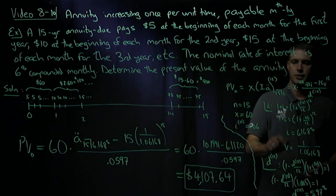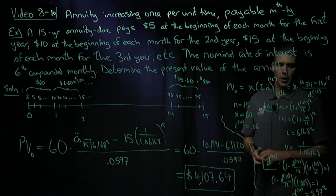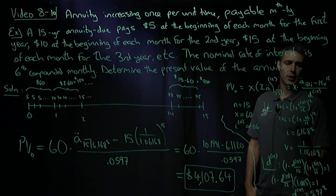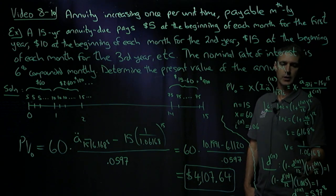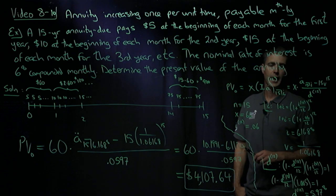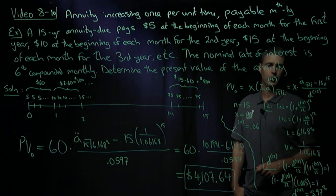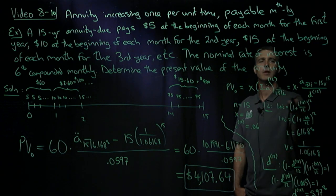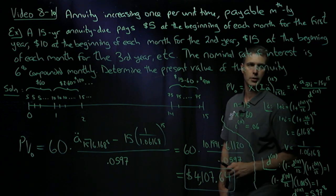I also need my nominal discount rate compounded monthly. So if I discount for one month followed by interest for one month, I should get back to where I started. So there's my conversion formula. I know my i^(12) over 12 is 0.005. And solving, I get my nominal discount rate of 5.97%. So I have all the ingredients I need to calculate via the formula.